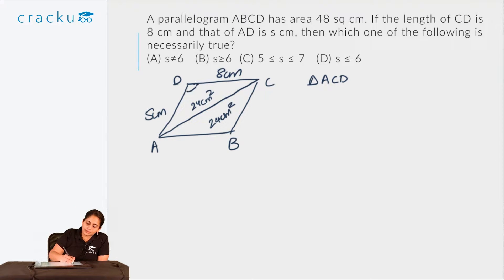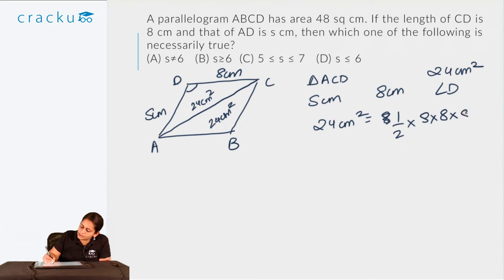Let this angle be D. One of its sides is S cm, the other side is 8 cm and the included angle is angle D. So what can I say? The area is 24 centimeters square. So using the simple area formula, I can say that 24 centimeters square is equal to half into S into 8 into sin D.